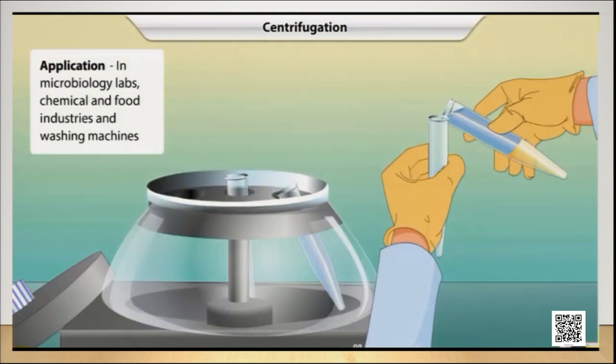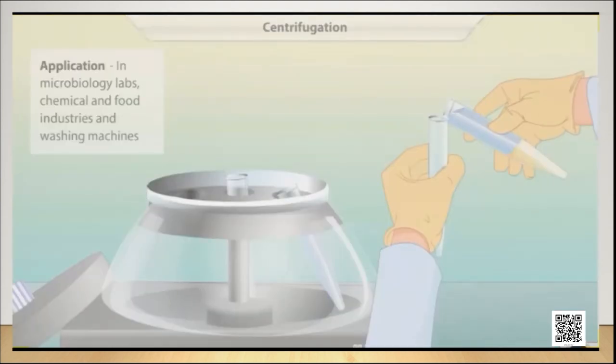Centrifugation is used in microbiology labs and in chemical and food industries. The principle of centrifugation is also used to squeeze out water from clothes in a washing machine. When we take out clothes from the washing machine, all the water has been separated — because the tub rotates at a very high speed, water being heavier is forced out and we get dry clothes. That is the application of centrifugation.